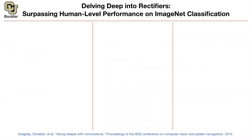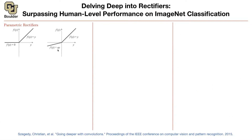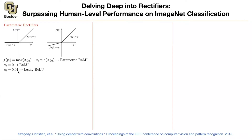This next paper assumes you are going to use a rectifier, a ReLU activation function. They introduce a new activation function called Parametric ReLU. Regular ReLU is the maximum of zero and y_i; Parametric ReLU adds a parameter a_i that you learn from your data: a_i times the minimum of zero and y_i. If a_i is zero you get ReLU back; if it's a small fixed constant, that's called Leaky ReLU.